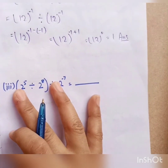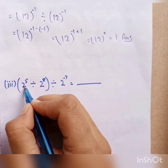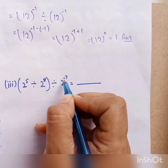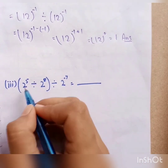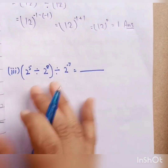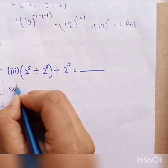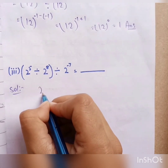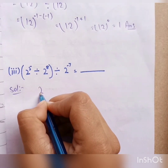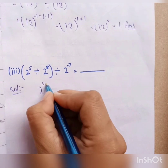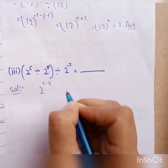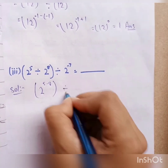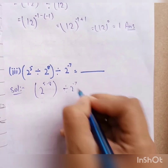We have two power five divided by two power eight, divided by two minus seven. Now let's solve the bracket first. What do we have in the bracket? The base is the same, so the same powers will subtract. We will do five minus eight, divided by two minus seven.